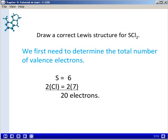Sulfur has 6, being in group 6A of the periodic table, and 2 chlorine atoms each contribute 7 electrons for a total of 20 electrons.